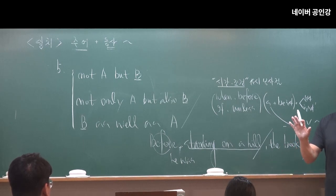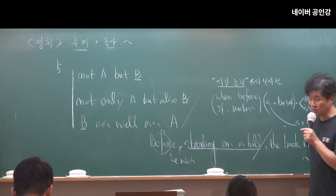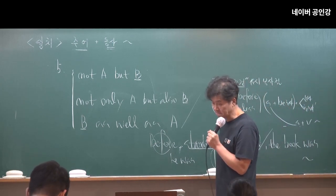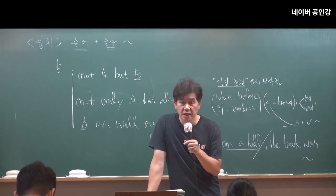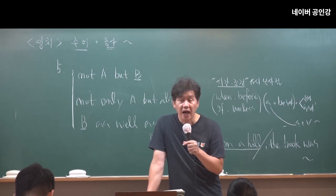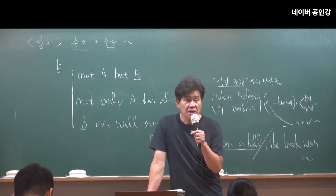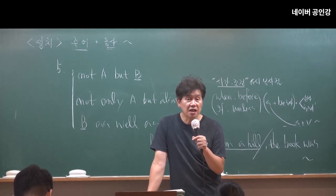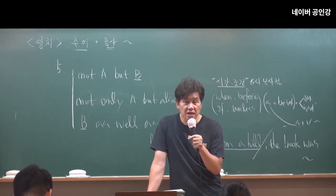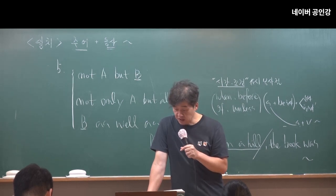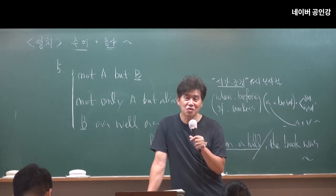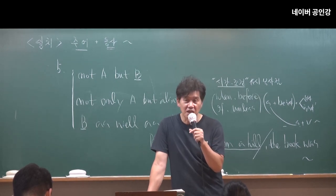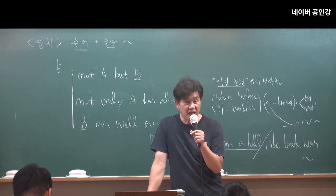그래서 이런 문제를 낼 때 이렇게 물어보는 거야. 다시 한 번 답 좀 봐봐. when하고 alone 사이에 주어, be동사 생략돼 있는데 주절의 주어가 I로 돼 있잖아. 그러니까 중간에 I am이 생략됐다는 거잖아 — 내가 혼자 있을 때, 이건 되잖아. 만약에 이 문장을 틀리게 해주면 주절의 주어를 책이나 테이블이나 이런 거 줬겠지. 그렇지? 그런 말이 안 되잖아요.